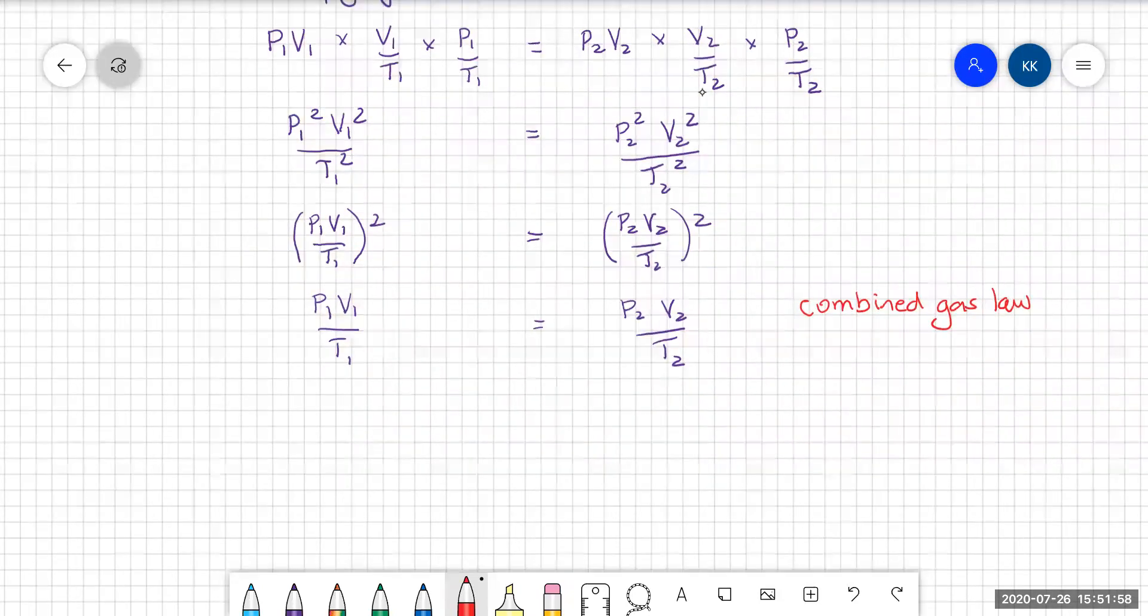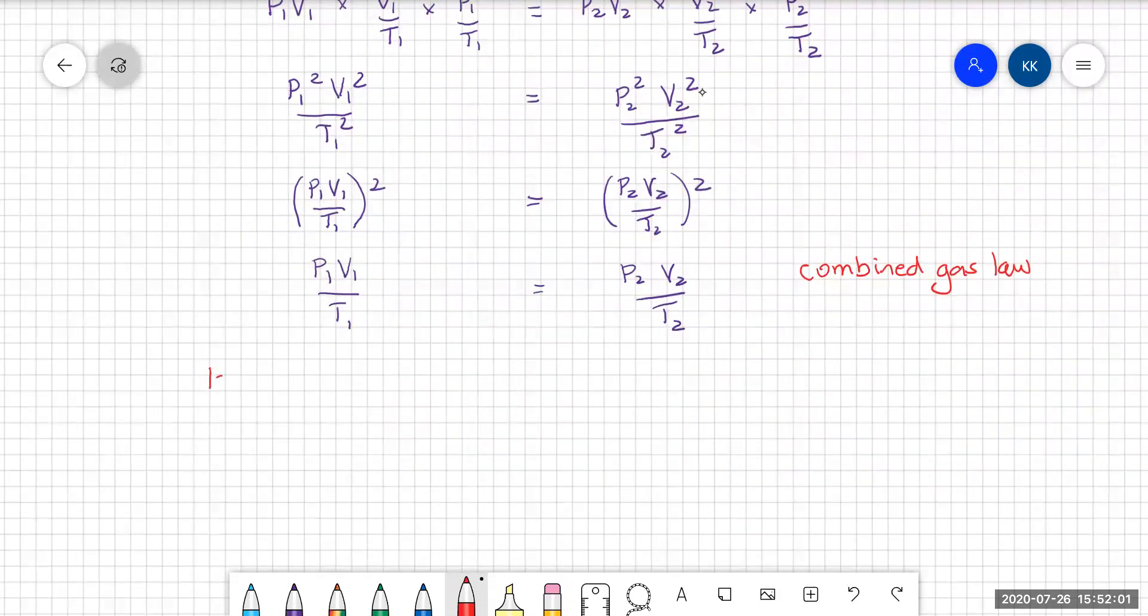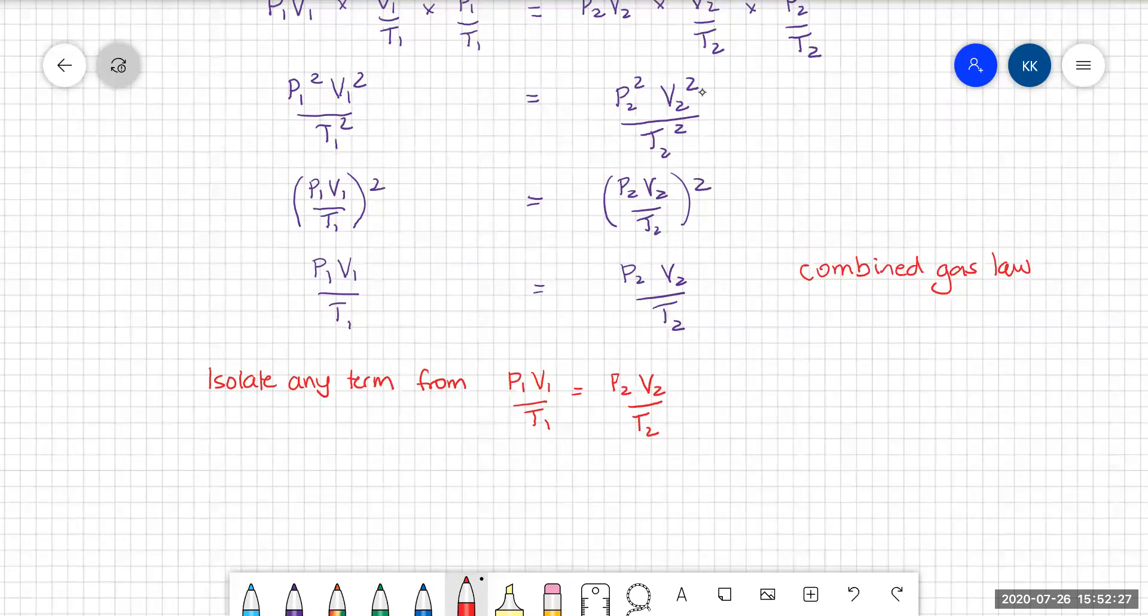And so you need to be able to isolate any of those terms. And you cannot put this formula into a triangle to rearrange it. You must be able to do the algebra. So fairly easy, supposing you wanted, let's look at an example, supposing you wanted to isolate V2 from this formula.